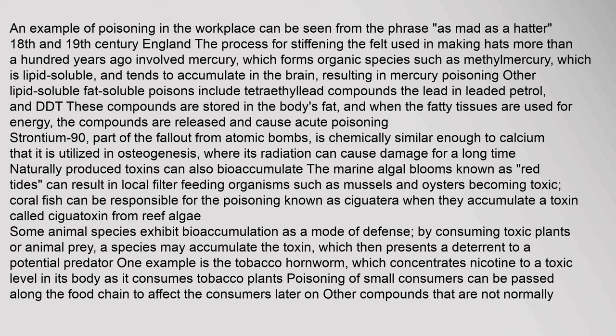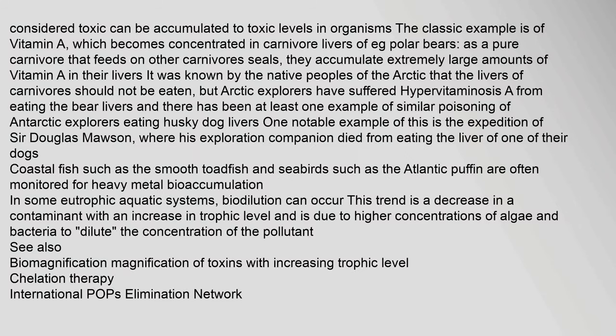Some animal species exhibit bioaccumulation as a mode of defense: by consuming toxic plants or animal prey, a species may accumulate the toxin, which then presents a deterrent to a potential predator. One example is the tobacco hornworm, which concentrates nicotine to a toxic level in its body as it consumes tobacco plants. Poisoning of small consumers can be passed along the food chain to affect later consumers. Other compounds not normally considered toxic can be accumulated to toxic levels in organisms. The classic example is vitamin A, which becomes concentrated in carnivore livers.